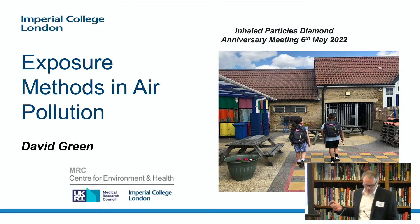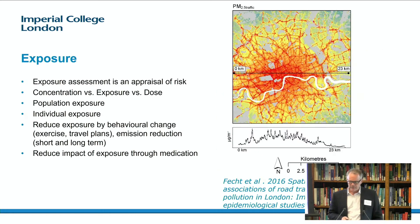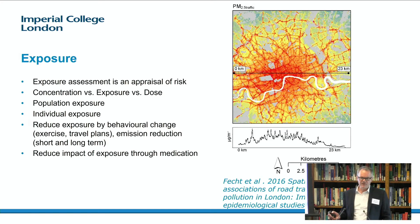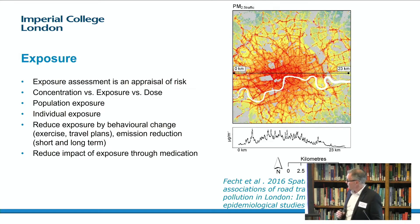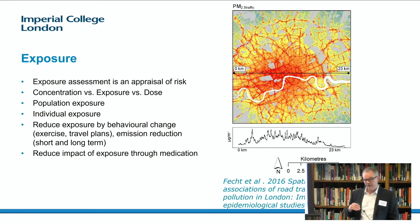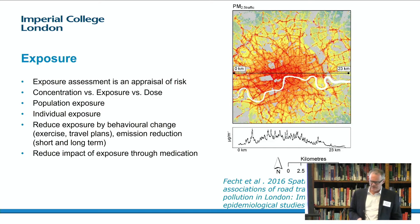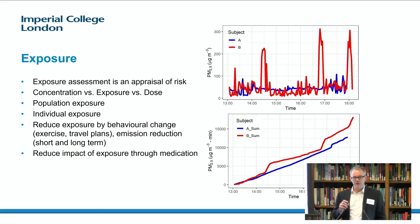Here's just one example of where we put backpacks on children to understand how they were exposed on their routes to school and at home. So, exposure is really just an assessment of risk. Sometimes it's compared to occupational exposure, sometimes to outdoors exposure. It differs from concentration because you can be exposed in different environments for different lengths of time. Sometimes you're looking at population exposure, and here's an example of work from Imperial where we modelled the concentration across London.